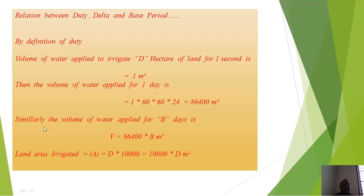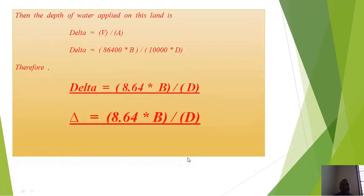The volume of water applied for one day is 1 × 60 × 60 × 24 = 86,400 cubic meters. For B days: V = 86,400 × B cubic meters. Land area irrigated A = D × 10,000 meter square. Then delta = volume / area = 86,400 × B / (10,000 × D), giving delta = 8.64 × B / D.